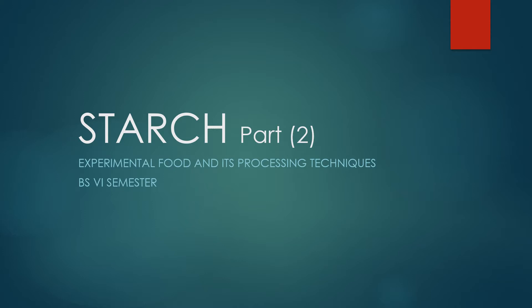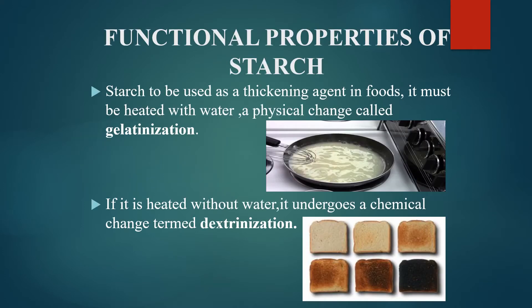Bismillah. Assalamu alaykum students, let's begin with the second part of our chapter — functional properties of starch, starch in cookery. We all know that starch is used to thicken the product, so starch is used as a thickening agent in food. Before that it must be heated with water, and this physical change which occurs in the starch due to the combination with water and heat is known as gelatinization. If it is heated without water, it undergoes a chemical change known as dextrinization, which we see in toasting, bread, or roti.